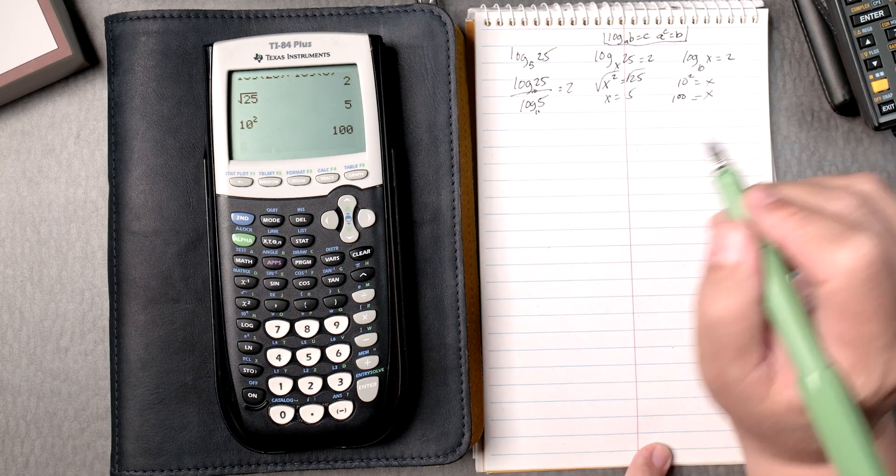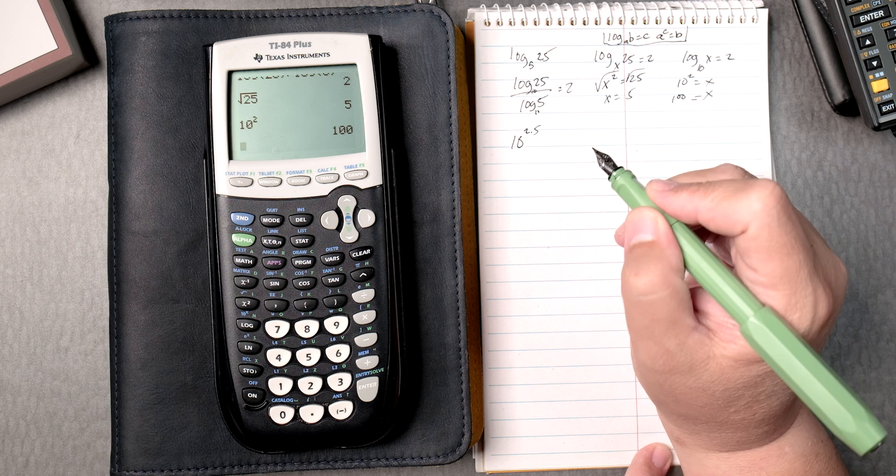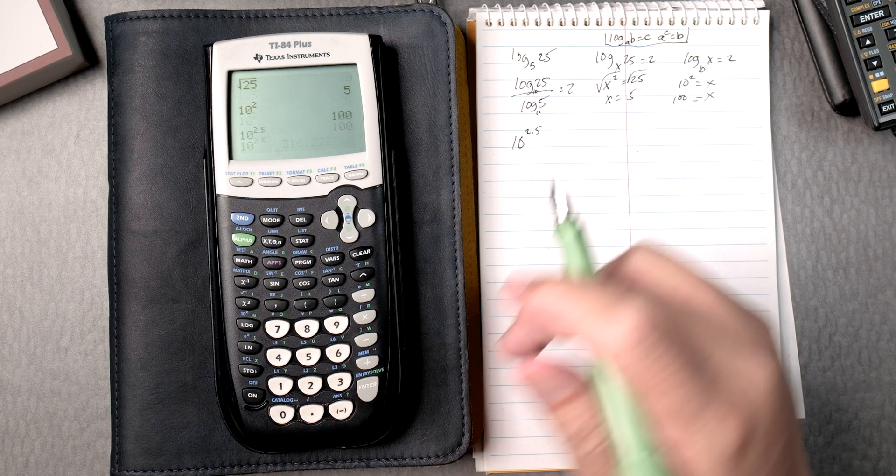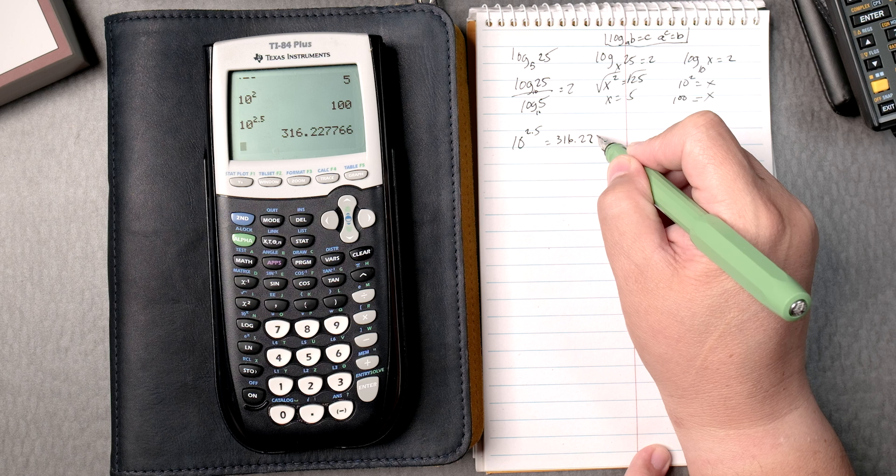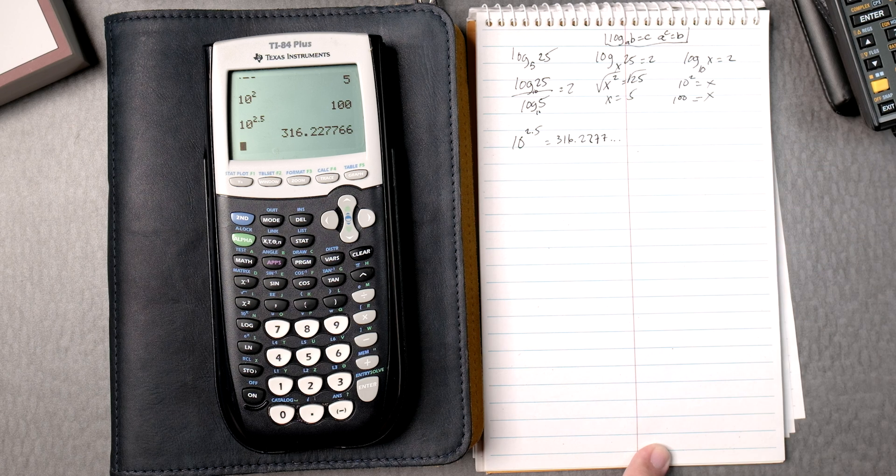Some antilogs, 10 to the 2.5. 10, carat, 2.5, enter, and that's going to give you 316.2277, so forth, which is great.